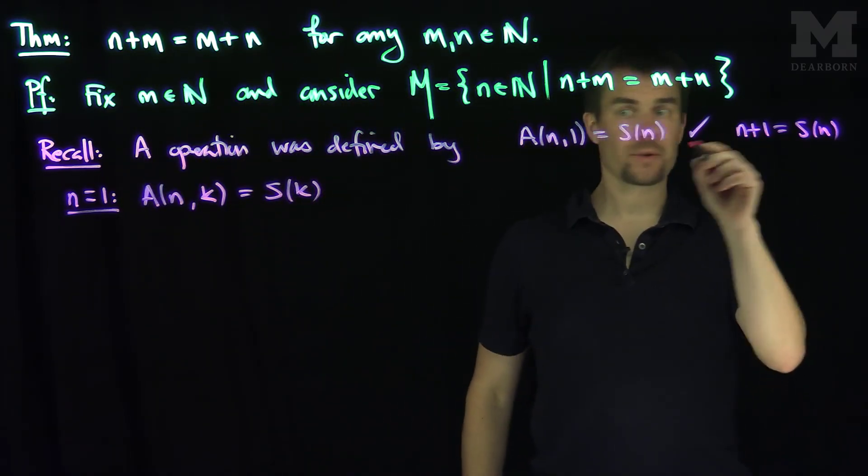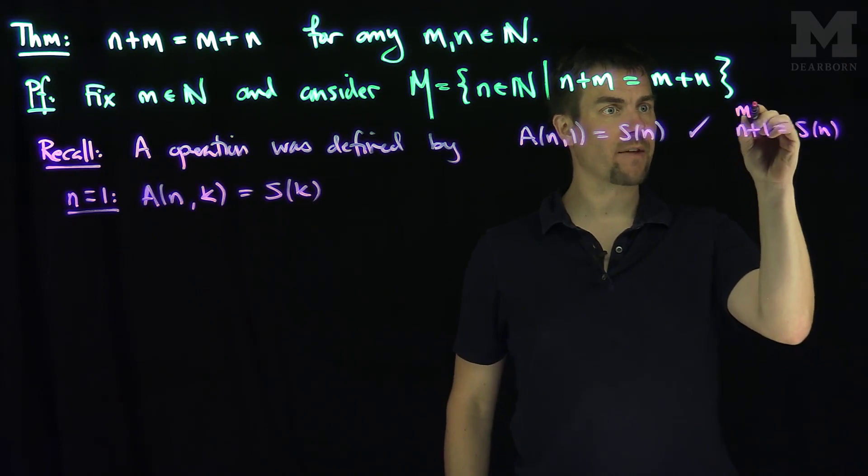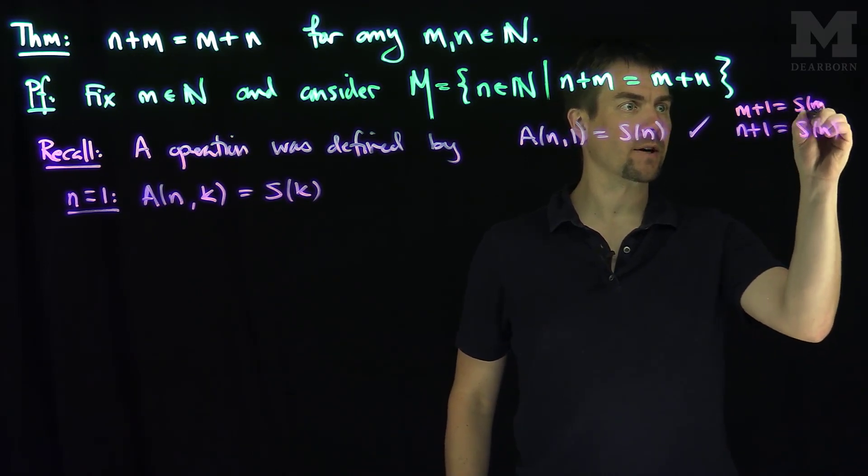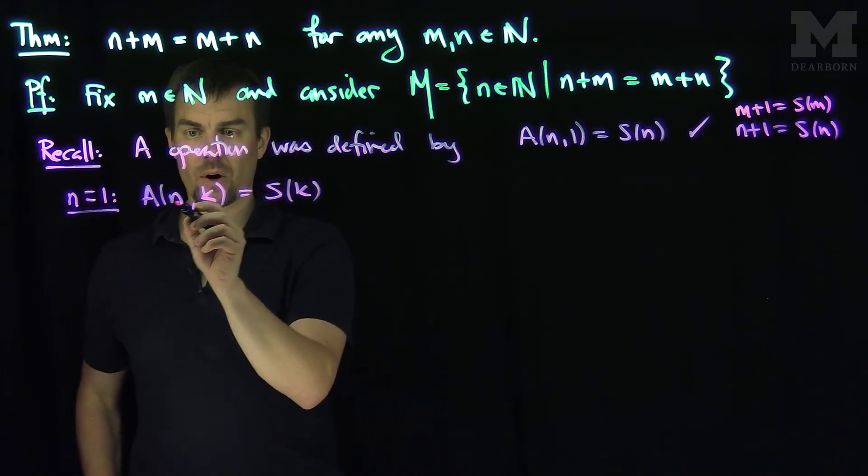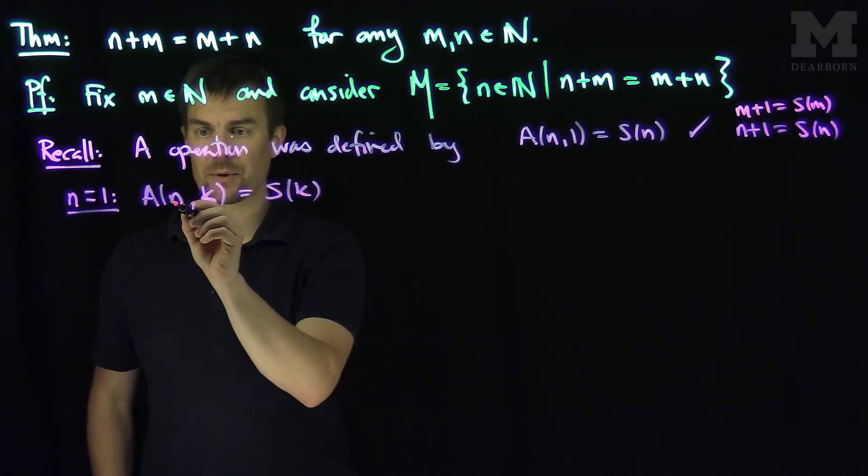Okay, so with this relationship, this is true for any m. So in particular, we have that m plus 1 is equal to S of m. And then this relationship over here implies that 1 plus k is the successor of k.